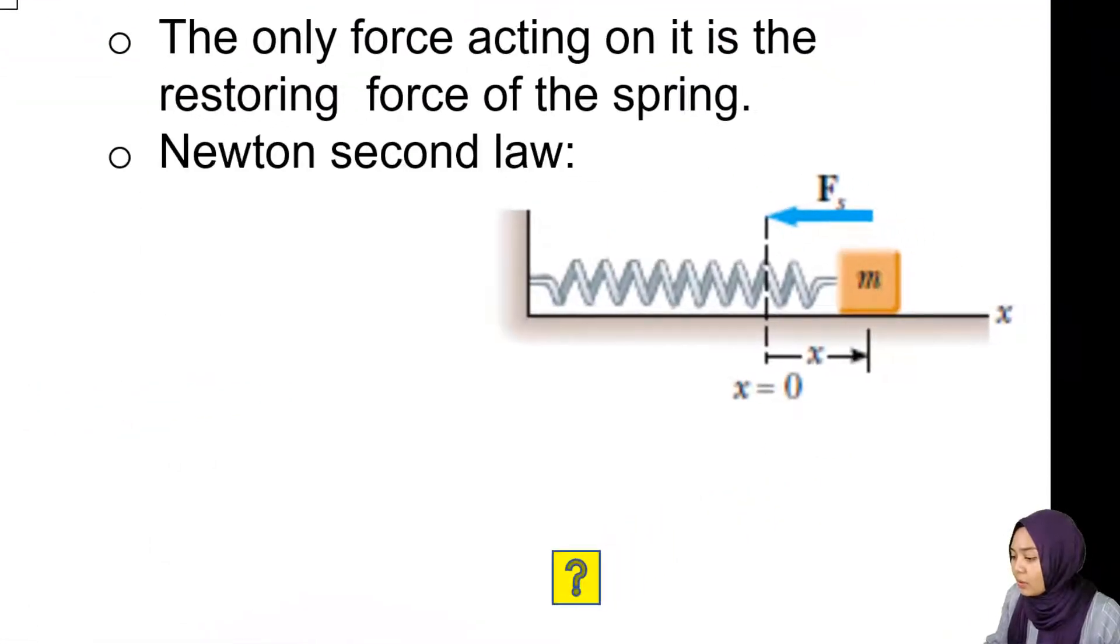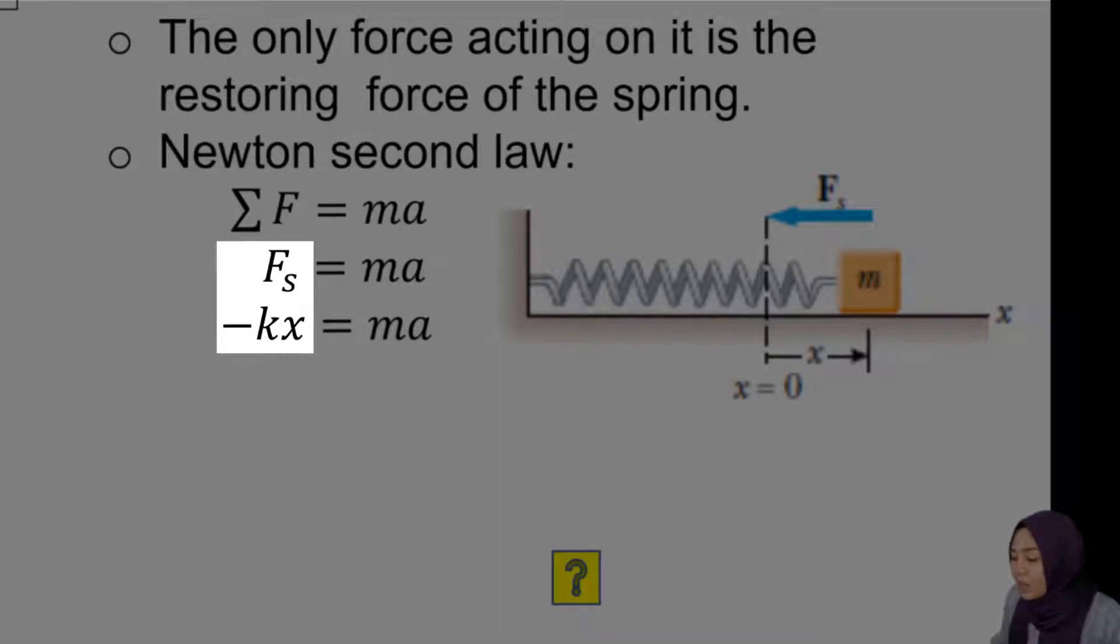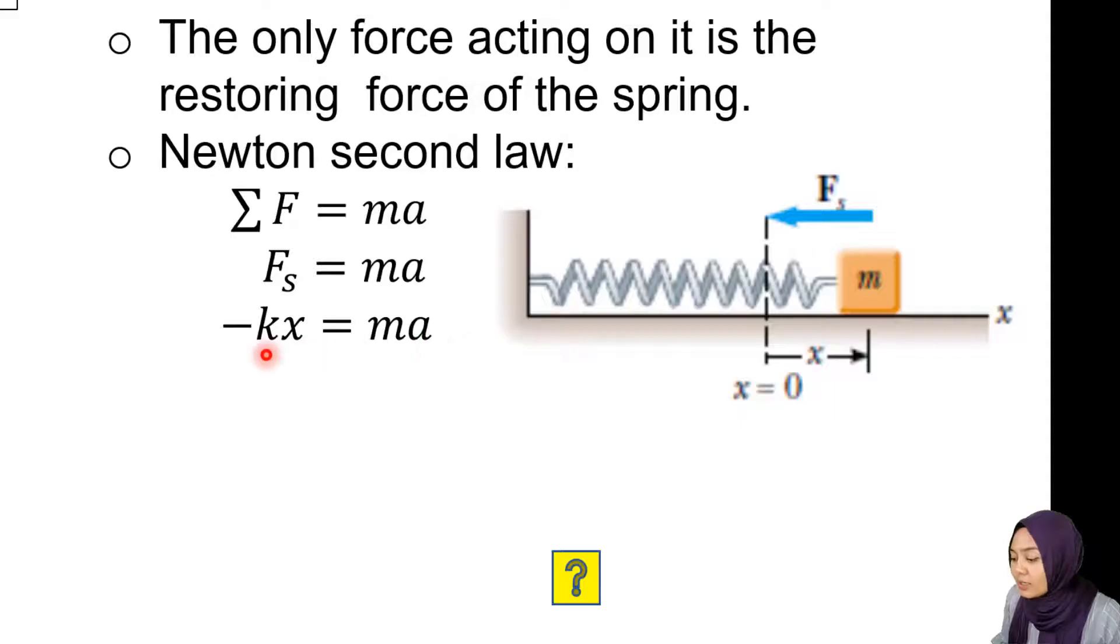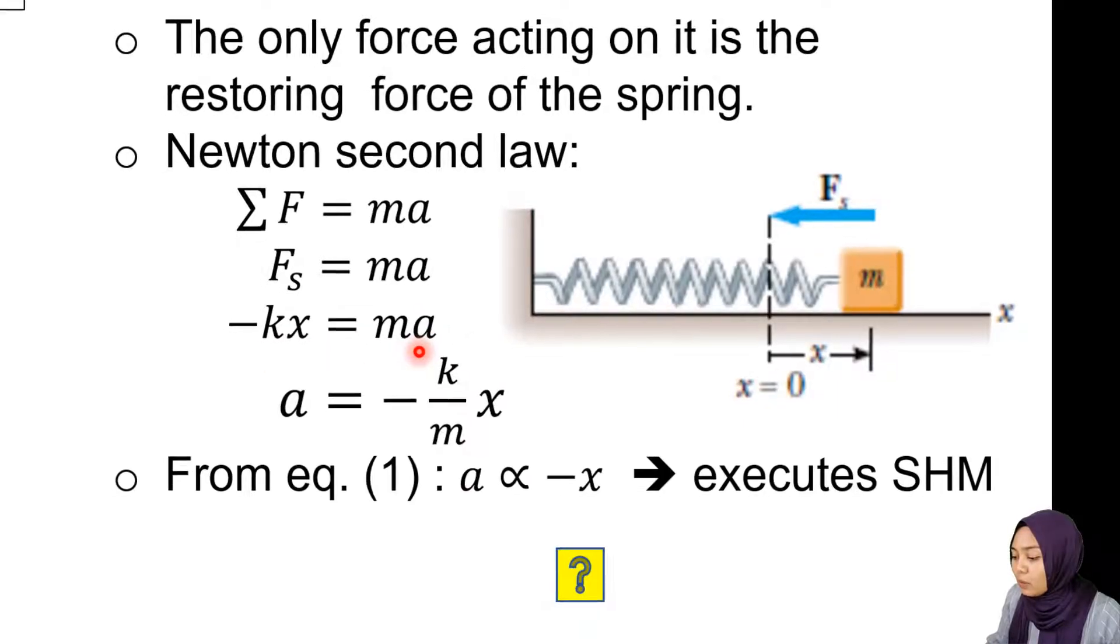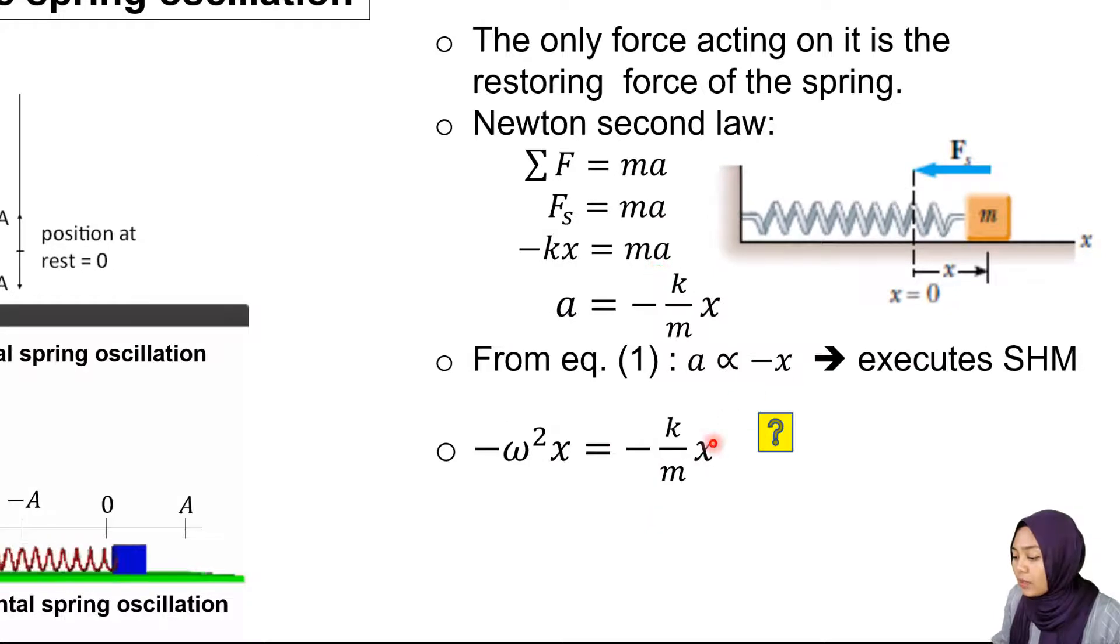Using Newton's second law of motion F = ma and Hooke's law which is Fs = -kx, we combine these two equations together. When we rearrange it with the SHM's first equation which is a = -ω²x, we can get this equation.